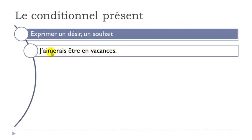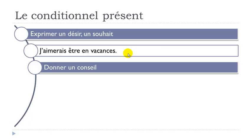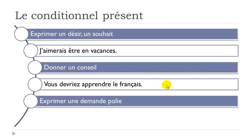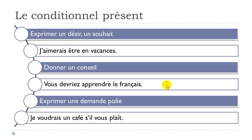Now let's see when to use the conditionnel présent. The first use is to express a desire or a wish — exprimer un désir ou un souhait. For example: j'aimerais être en vacances (I would like to be on vacation). The second use is to give advice — donner un conseil. For example: vous devriez apprendre le français (you should learn French).